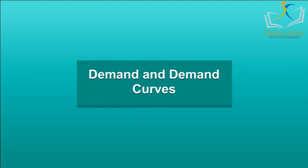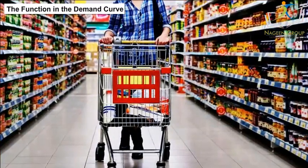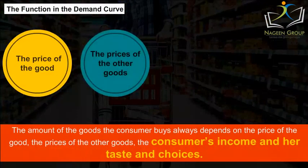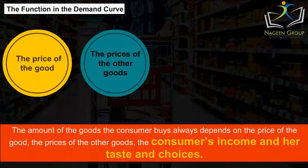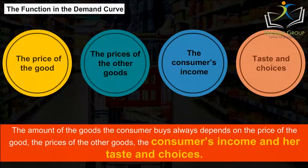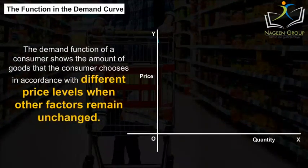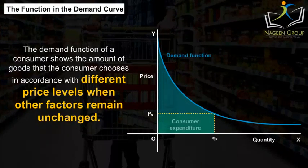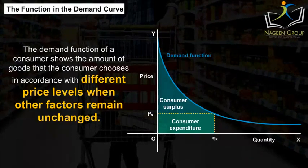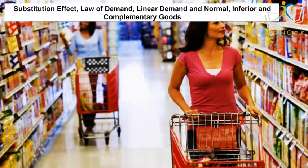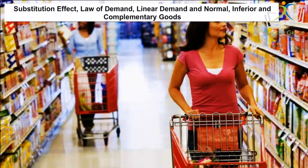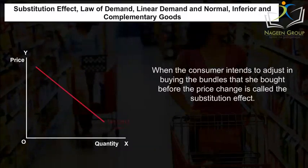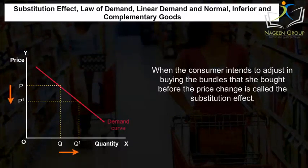Demand and Demand Curves. The amount of goods the consumer buys always depends on the price of the good, the prices of other goods, the consumer's income, and her tastes and choices. The demand function of a consumer shows the amount of goods that the consumer chooses in accordance with different price levels when other factors remain unchanged. The substitution effect refers to when the consumer adjusts buying the bundles she bought before the price change, with income also adjusted.